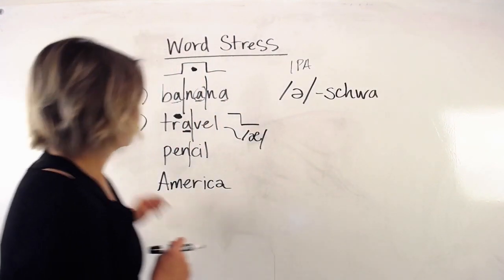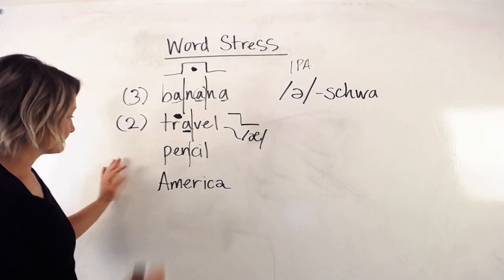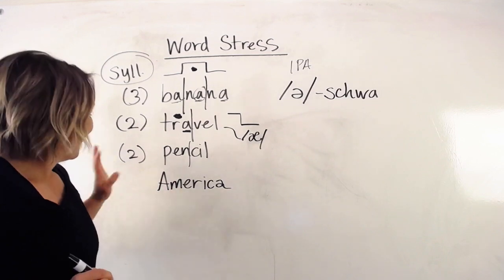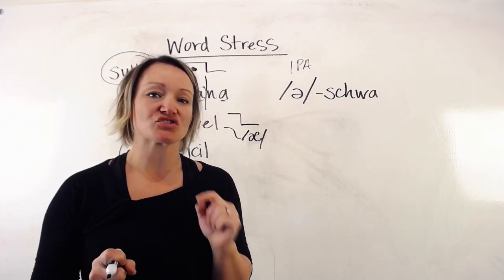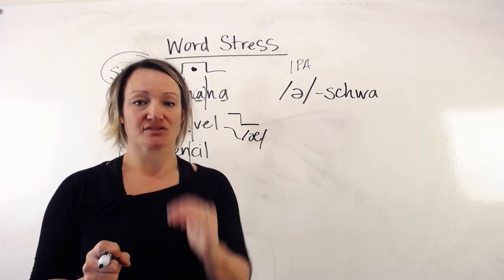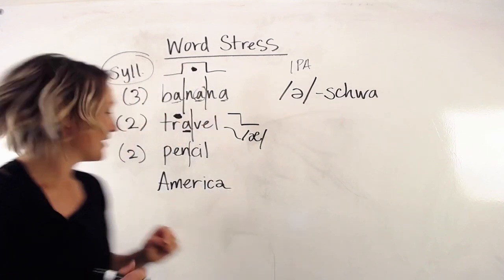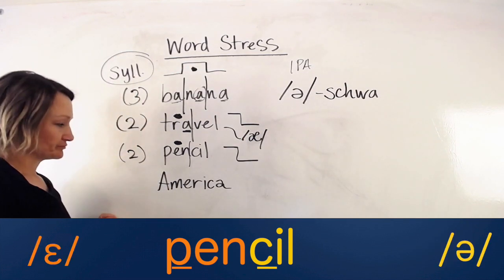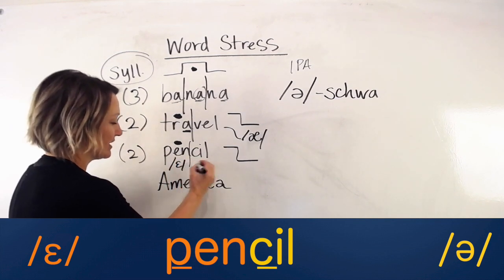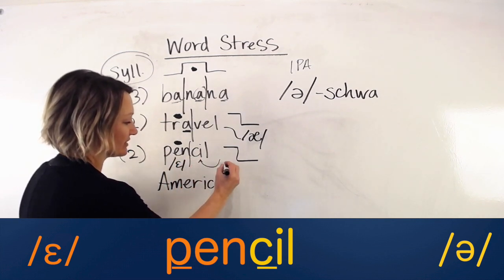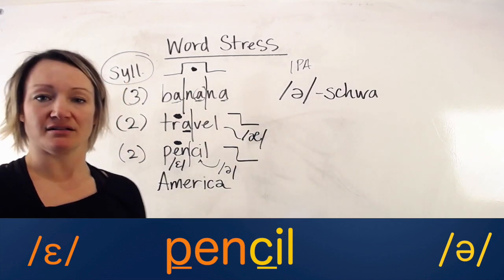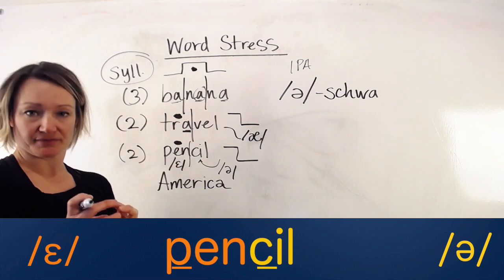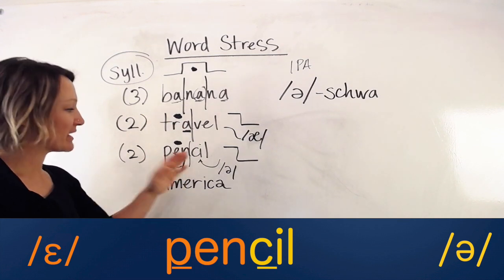Our next word is 'pencil.' We've got two syllables. Which one is the stronger one — 'pencil' or 'pencil'? The first one, right? 'PEN-cil.' The 'eh' sound here is clear and strong, and the second syllable reduces to the schwa: 'pencil.' I'm not saying 'penCIL' — it's 'PENcil.' This one is clear, this one is reduced.